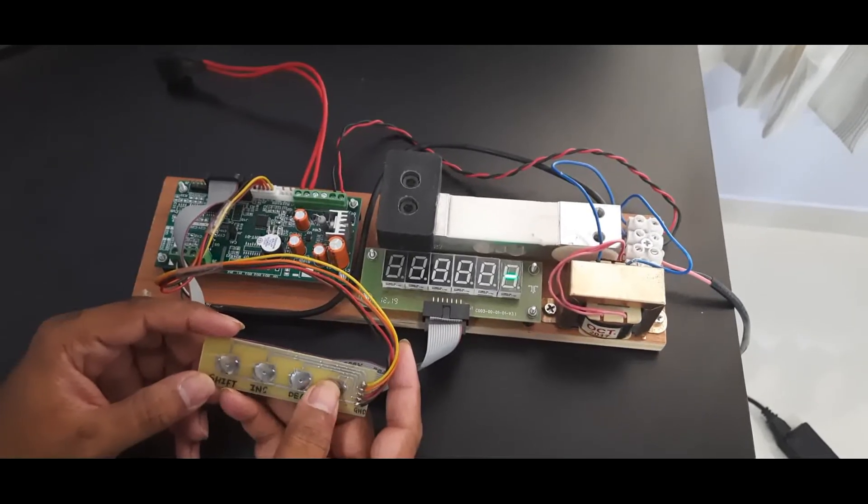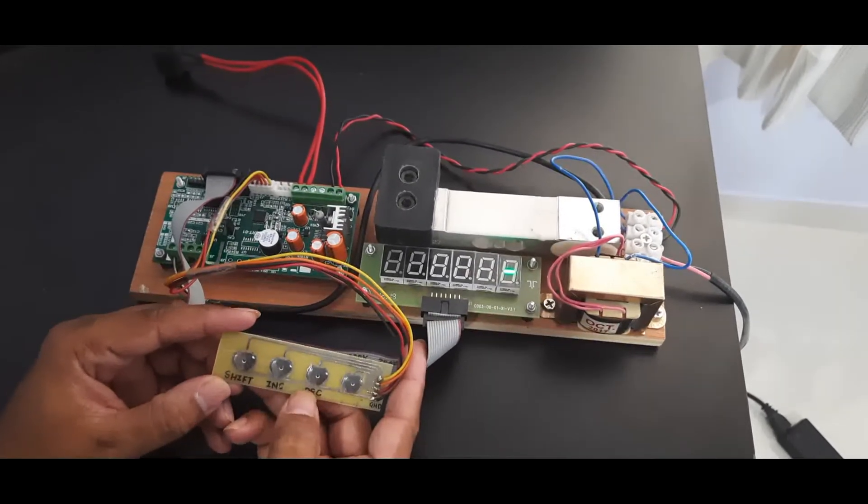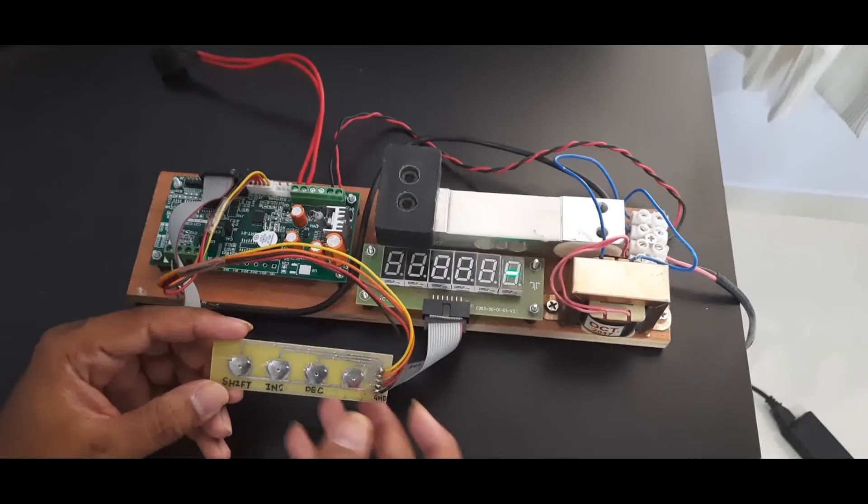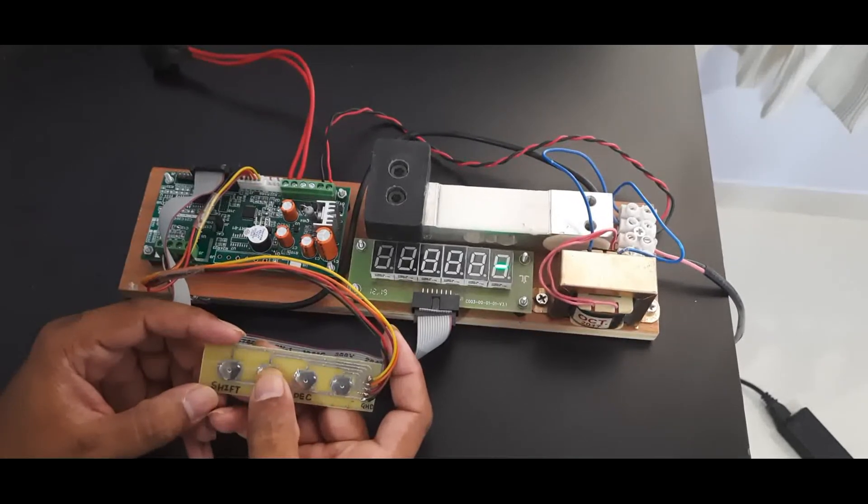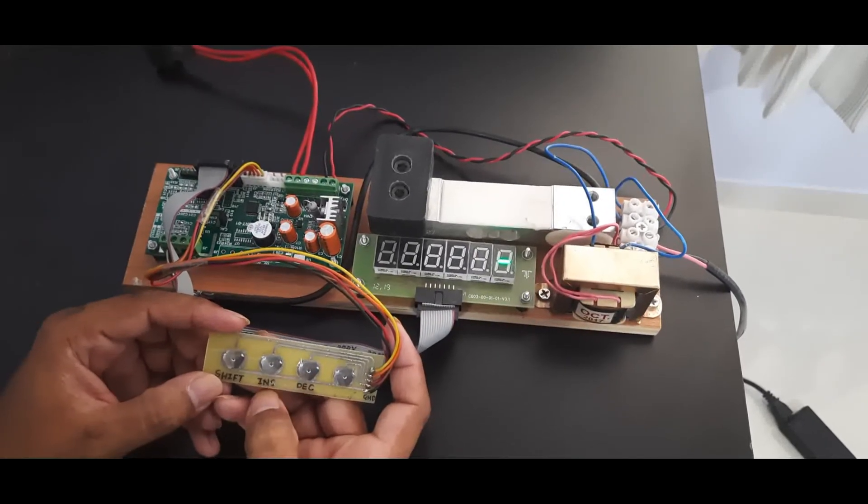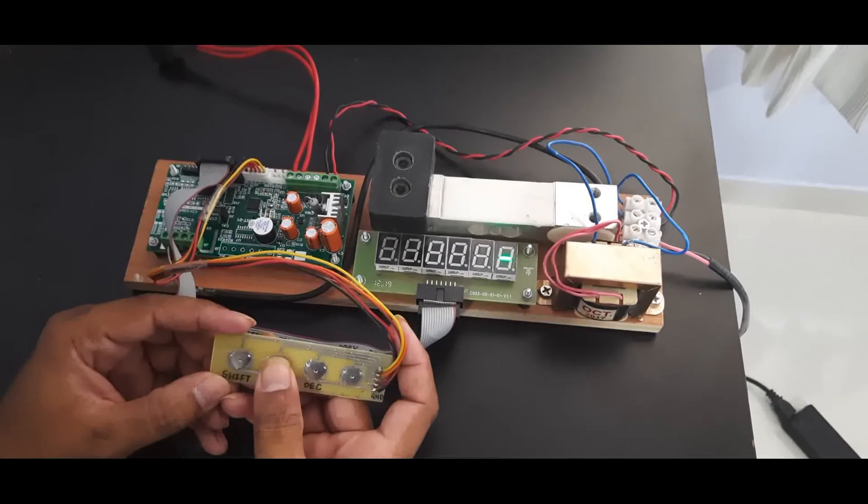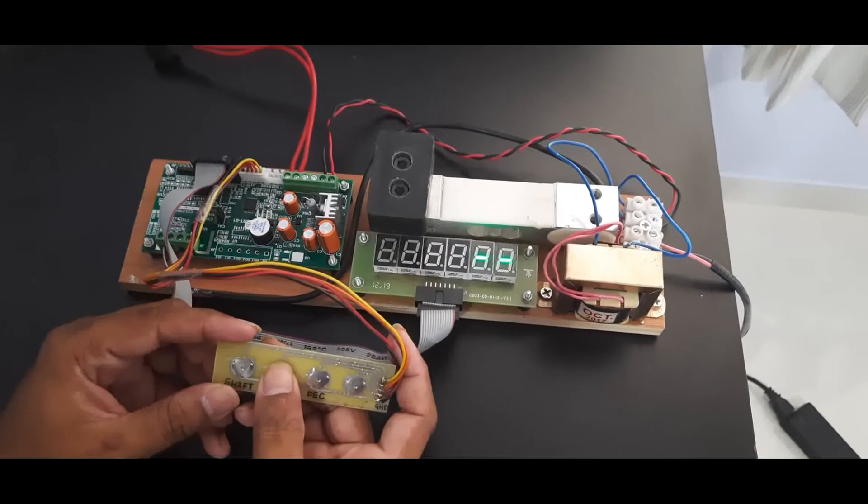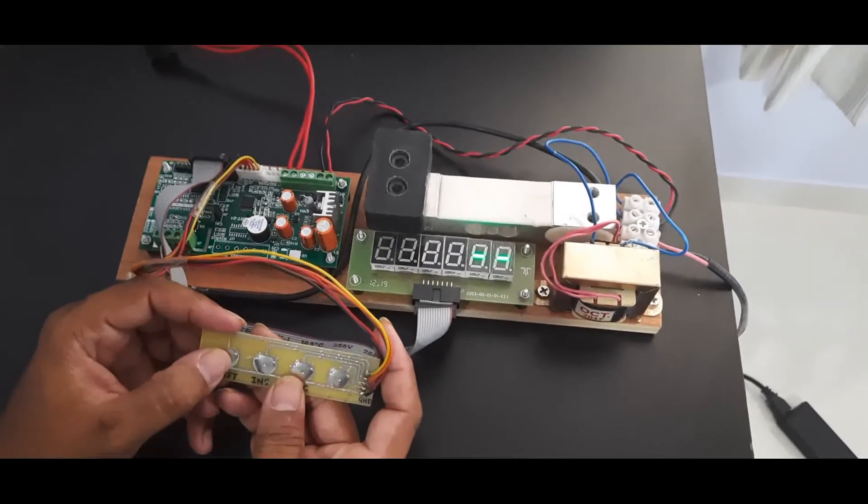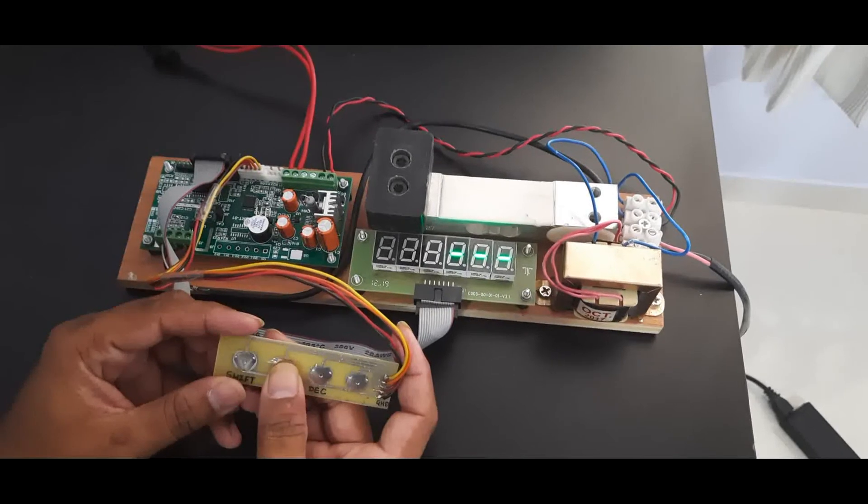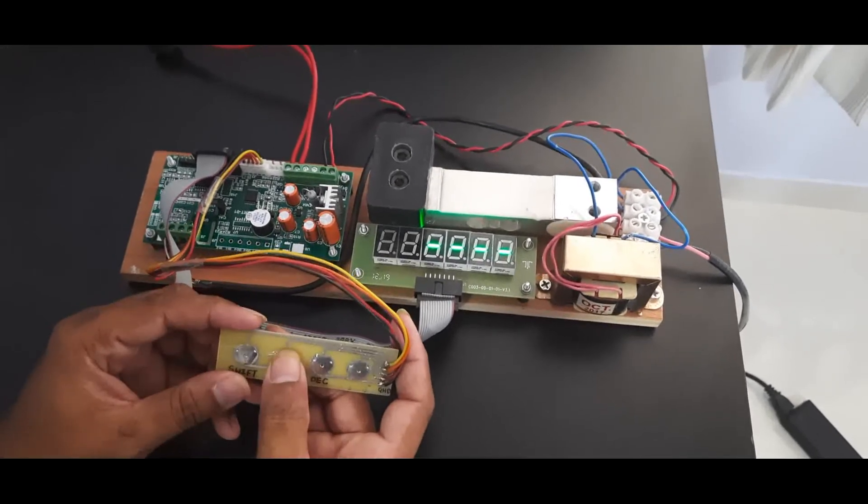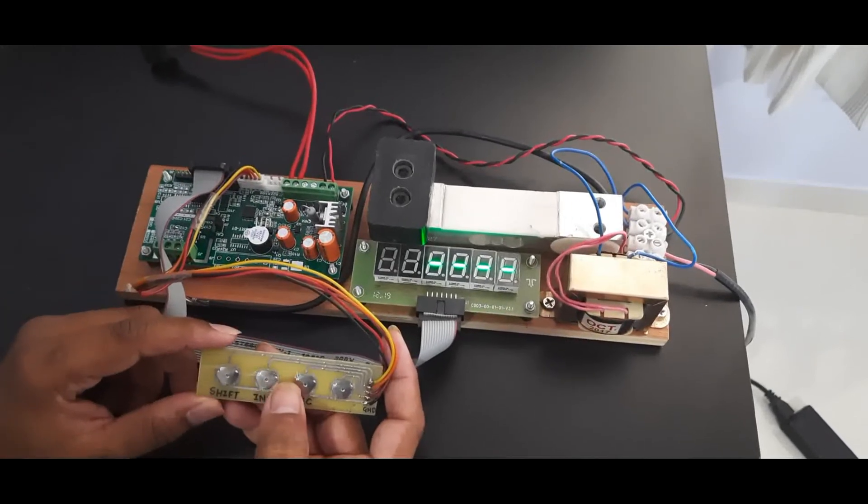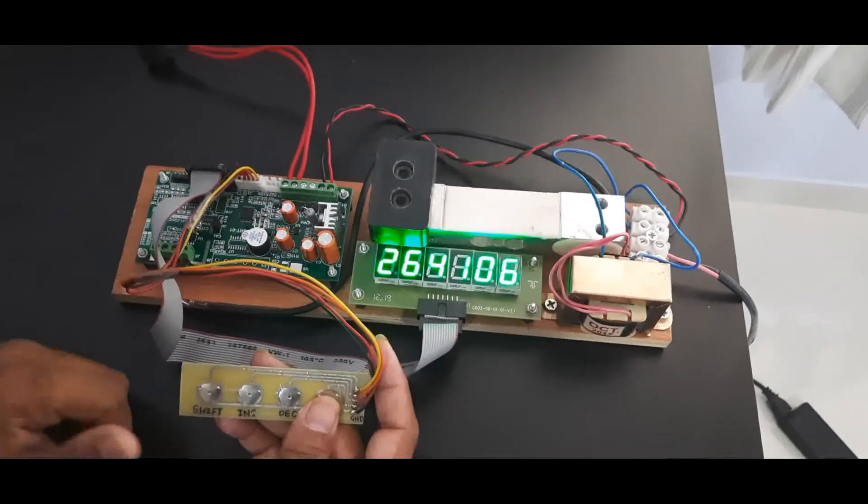Calibration password is four times two. By default the value of the hyphen is zero. To enter two, I need to press increment key twice: one, two, then shift. Again one, two, shift. Again one, two, shift. Again one, two. I've entered the complete password 2222. Now I press enter and it goes into the calibration menu.